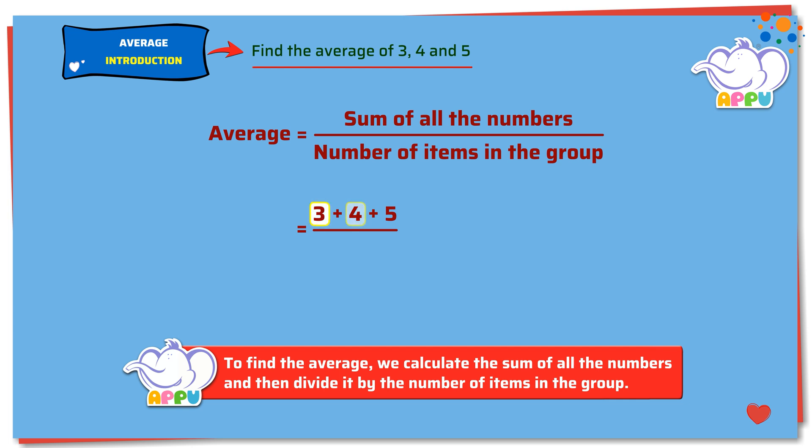1, 2 and 3. We have 3 items. 12 divided by 3 equals 4. The average of the given numbers is 4.